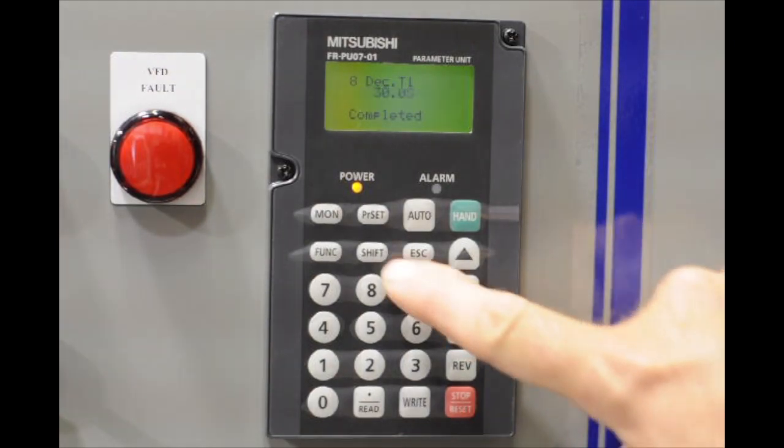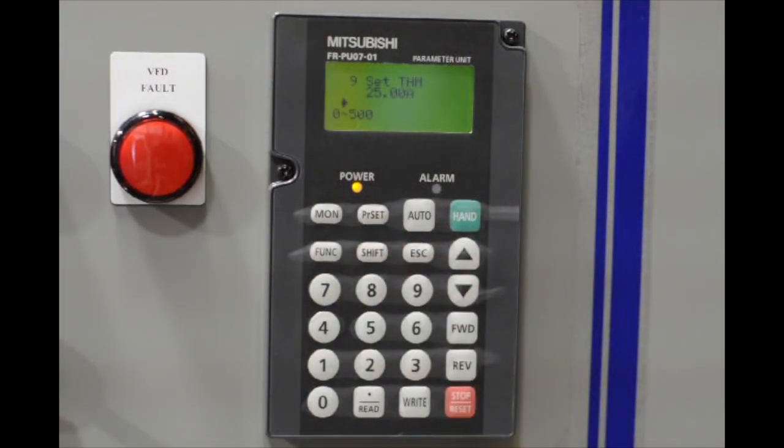Now, we're going to move to parameter nine by pushing shift. This is where we put in the thermal value of your motor. Whatever the current rating of your motor is, we're going to go ahead and type it in here. Let's just say your motor has a decimal place point like fifteen point nine.